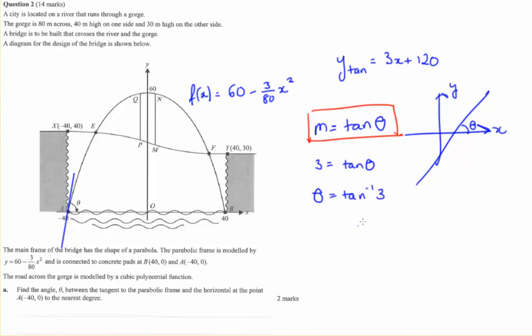You take your answer in radians and multiply by 180°/π. Leave your calculator in radians - it's just easier. To the nearest degree, theta is 72 degrees.